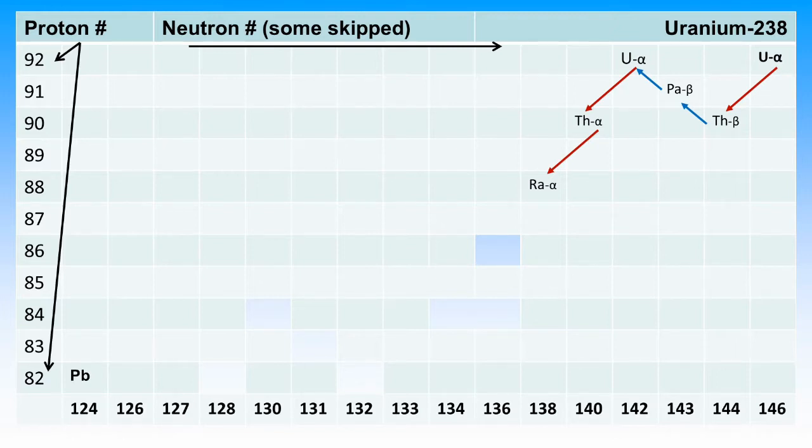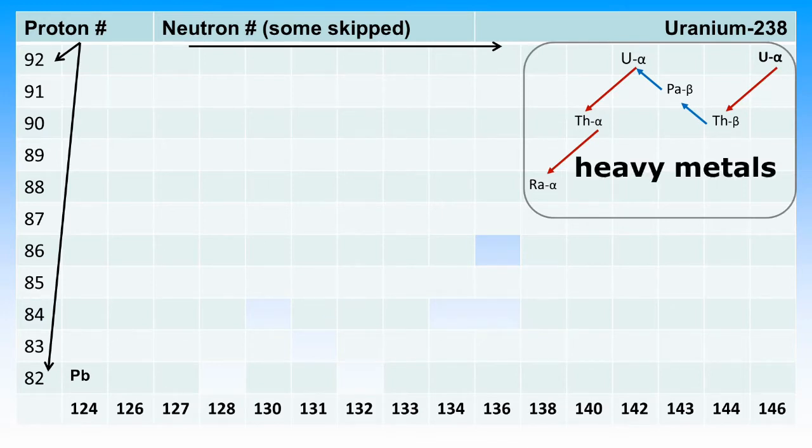Protactinium-234 beta decays to uranium-234. Uranium-234 alpha decays to thorium-230. Thorium-230 alpha decays to radium-226. Radium-226 alpha decays to radon-222.